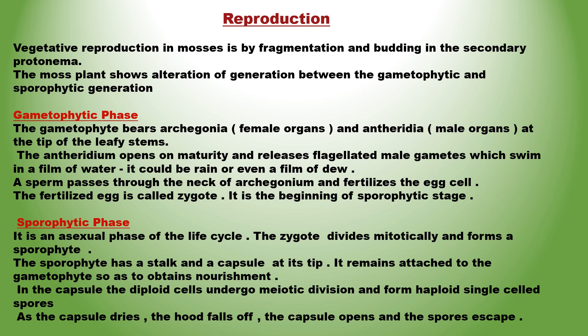Depending on the species of moss, the sex organs could be on different branches of the same plant or on different plants. The antheridium opens on maturity and releases flagellated male gametes, which swim in a film of water — rain or even dew. A sperm passes through the neck of the archegonium and fertilizes the egg cell. The fertilized egg is called the zygote, marking the beginning of the sporophytic stage. The zygote divides mitotically and forms a sporophyte, which has a stalk and a capsule at its tip, remaining attached to the gametophyte to obtain nourishment.